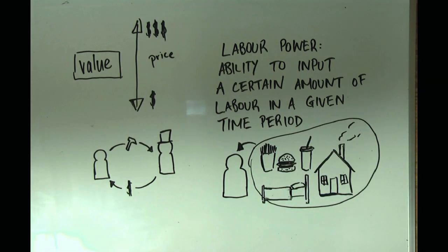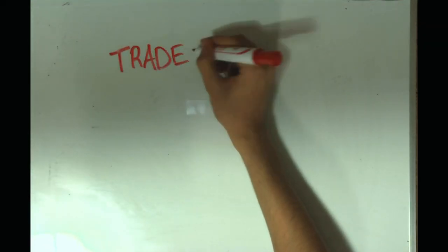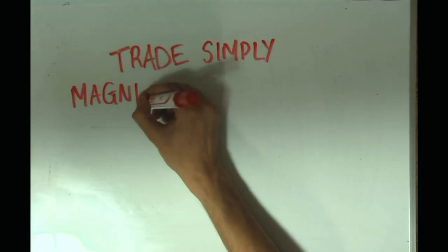Returning to Marx's point about free trade, if free trade results in the reduction of prices of other commodities, the cost of labor itself will go down too, because a worker would need less money to reproduce his or her labor power. To summarize, trade simply magnifies the consequences of unlimited competition to the global level.